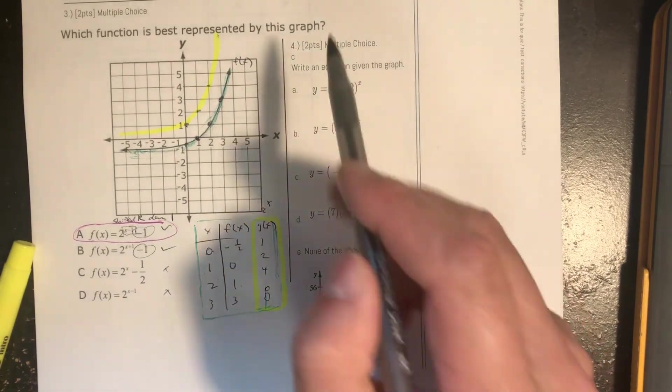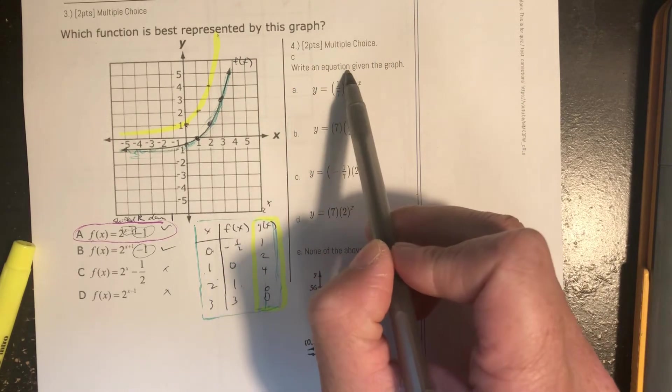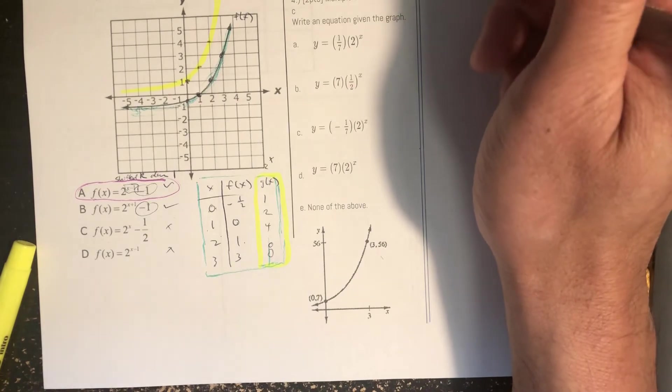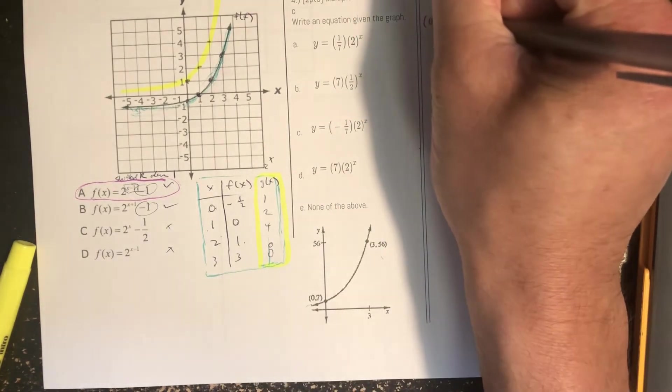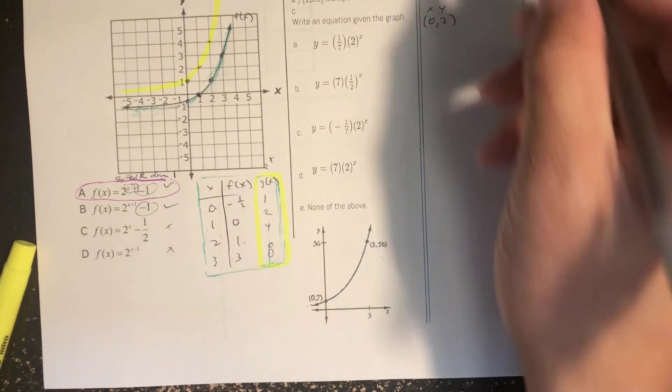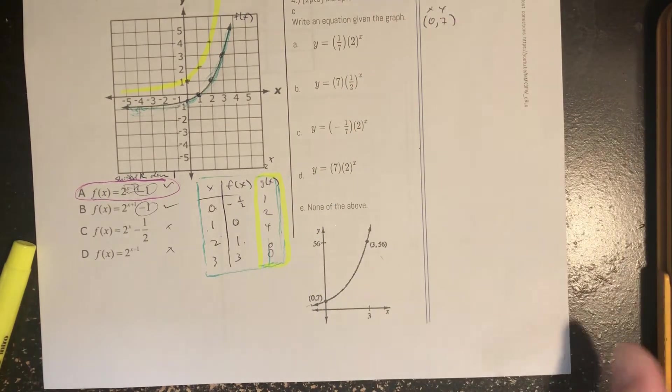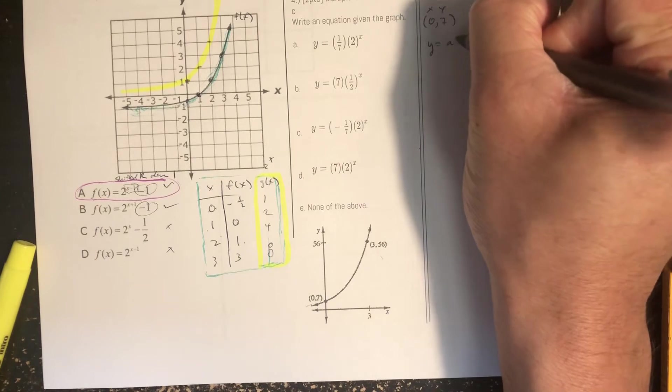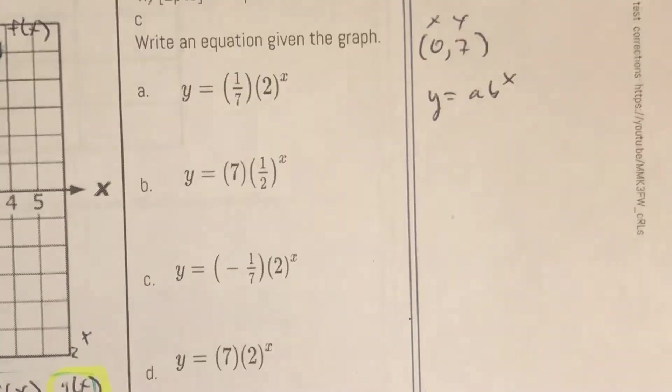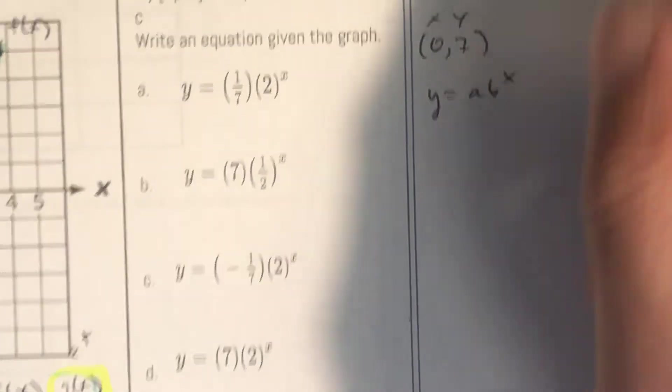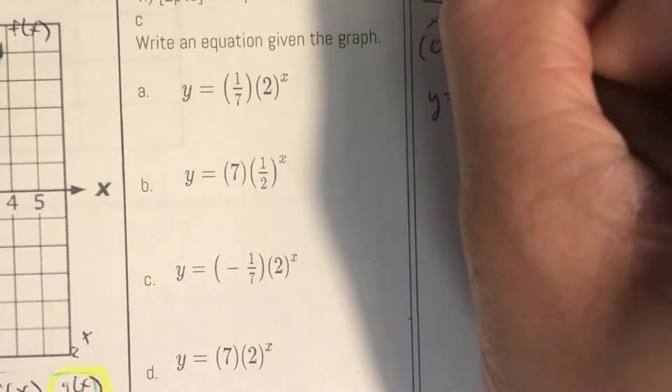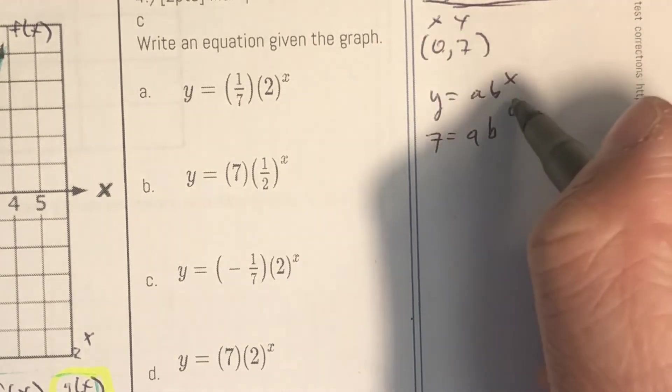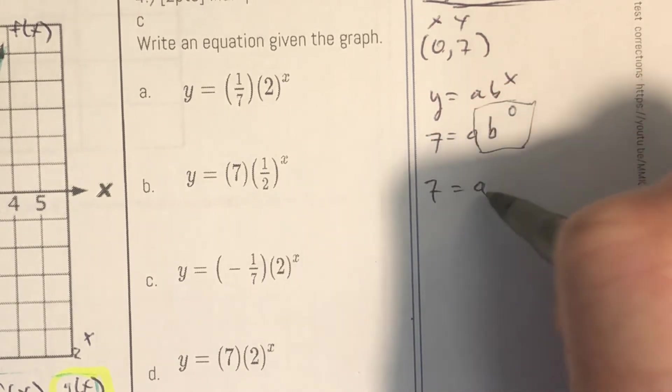Number 4: Write an equation for the graph. So in this problem you can take the two order pairs that are given to you, 0, 7. So I'm first going to work with this order pair and then because my two points are not consecutive we can use systems to solve that. So y equals a times b to the x. And then basically what I'm going to do is I'm going to solve for a. Well if I put a 0 up here and a y equals 7, that is just going to equal 1. So 1 times a or just a, so a is equal to 7.